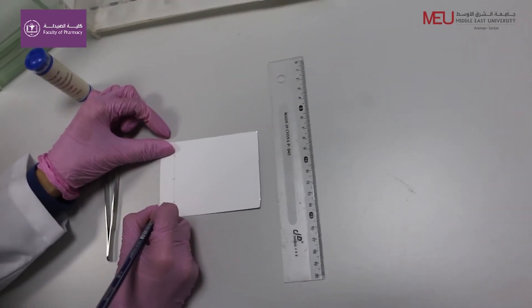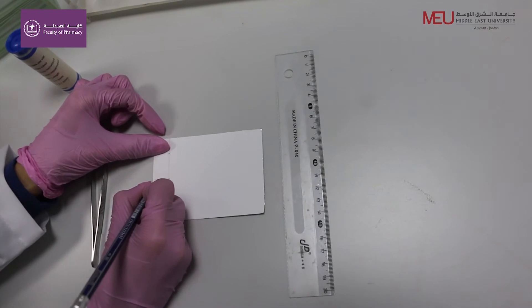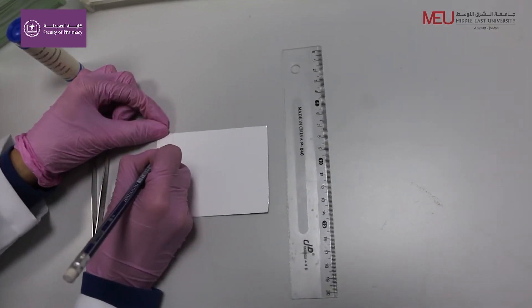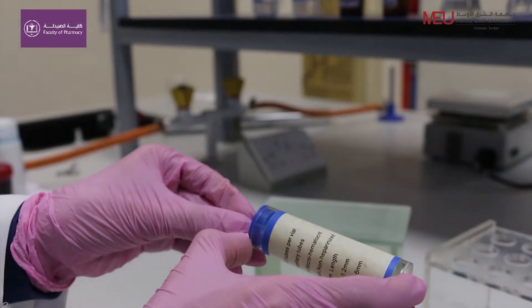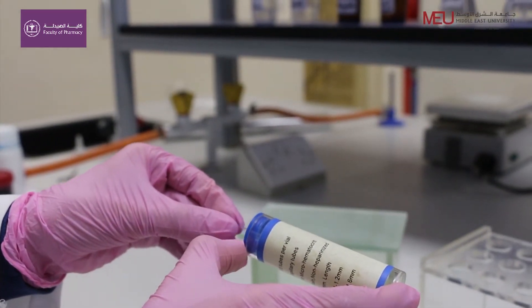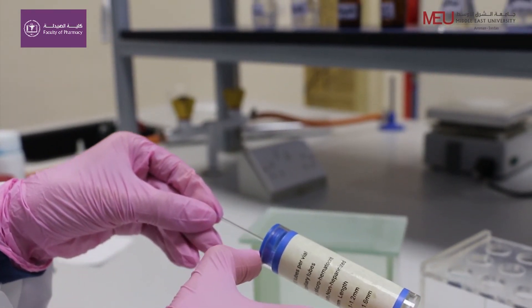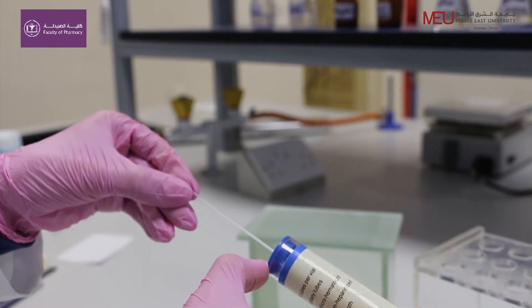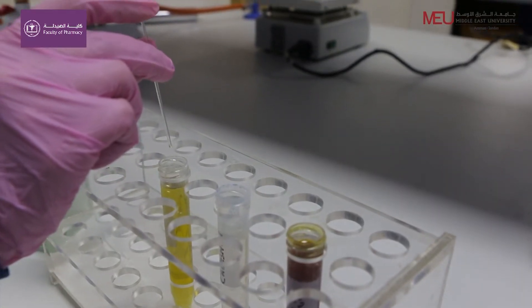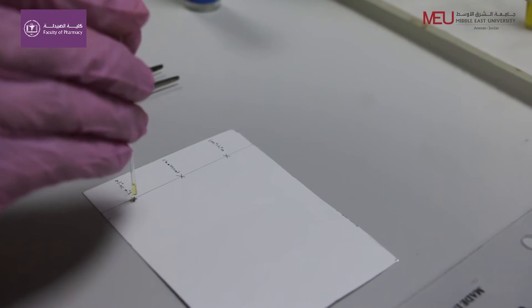Label each position with your known or unknown compounds. Using micro capillary tubes, apply your compound onto the plate. The tube is fragile, so please handle with care. Place the capillary tube into your lipid samples.